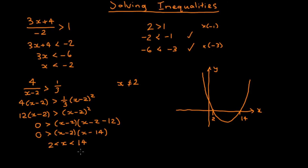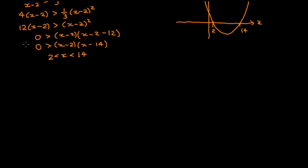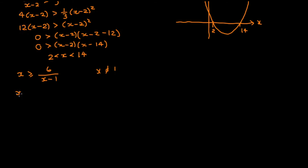So perhaps we'll try one more question. Suppose we have x is greater than or equal to 6 over (x minus 1). Again we have a denominator with an x in it, so we'll start by noting that x cannot equal 1. We'll use the same trick as the previous question, which is to multiply both sides by (x minus 1) squared — and that's a positive number, so we keep our sign the same. On the left-hand side we get x times (x minus 1) squared, greater than or equal to 6 times (x minus 1).